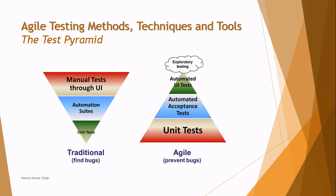On the other side, in Agile the objective is to prevent bugs — we do not want a large number of bugs at the early stage itself. A lot of unit testing is performed because we have the CI concept and a lot of builds being released every day. As we proceed up the pyramid, the number of tests shrinks. Automated acceptance tests and automated UI tests are performed, and generally up to 70% of tests being executed in Agile are automated.